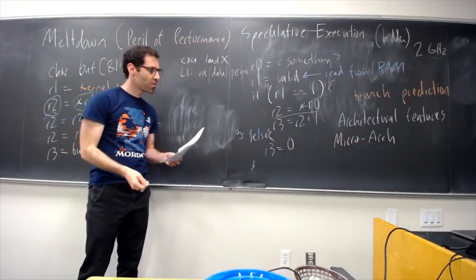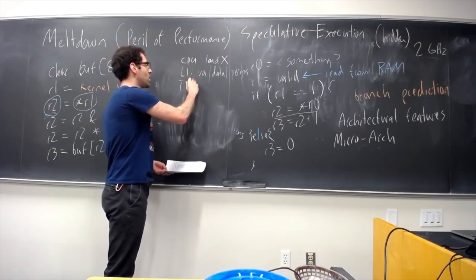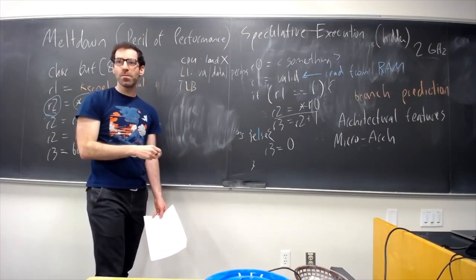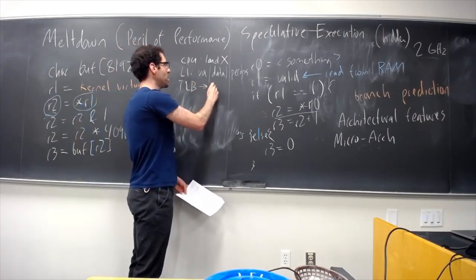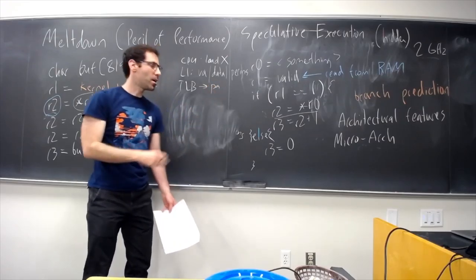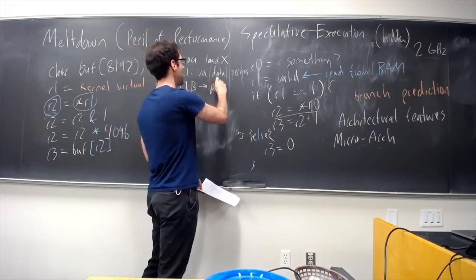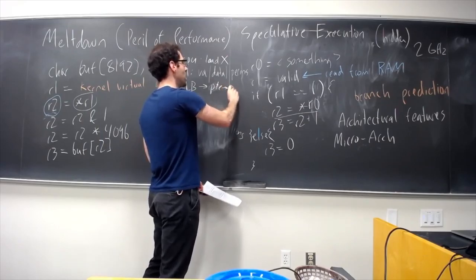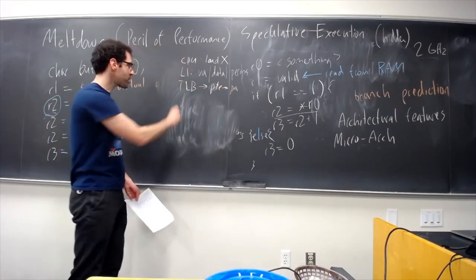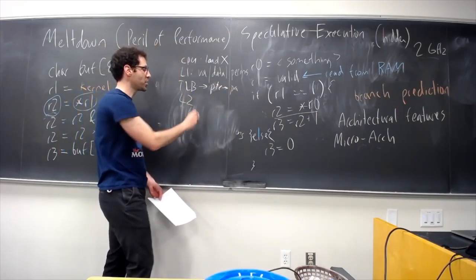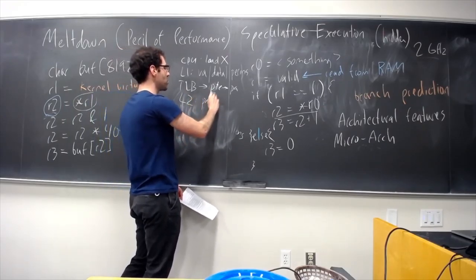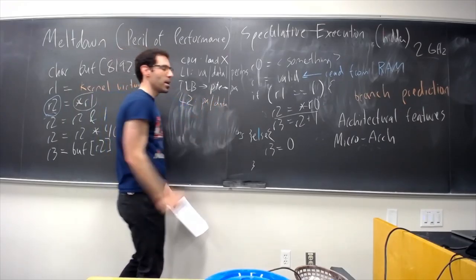So, after L1, we need to go to the TLB. Hopefully the TLB gives us a page table entry, which we can get the physical address, and then on to our L2 cache, which has, like, our physical address, and the data that we're looking for.